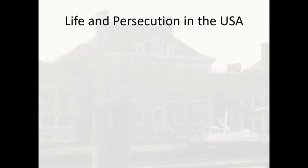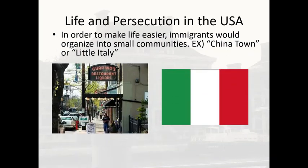Once immigrants got into the United States, they would organize into small communities to make life easier — examples being Chinatown or Little Italy, the most famous of both being in New York City. These types of places spread all over the United States. Even in Ohio we have Little Italy in Cleveland or the German Village in Columbus. Many of these places today may have shrunk, but a lot of them still retain much of the flavor and culture they had when originally founded.